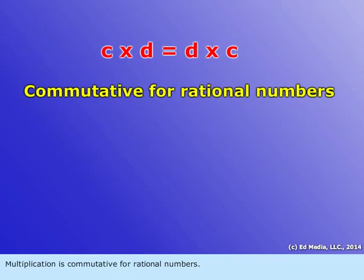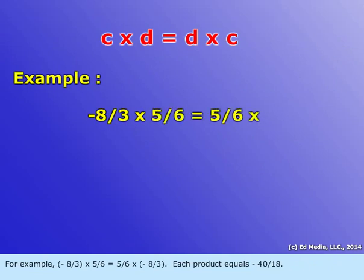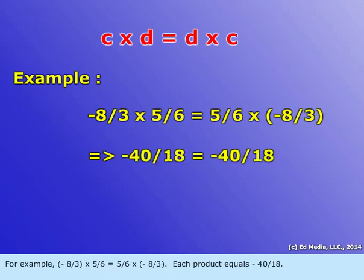Multiplication is commutative for rational numbers. For example, negative eight-thirds times five-sixths is equal to five-sixths multiplied by negative eight-thirds. Each product equals negative forty-eighteenths.